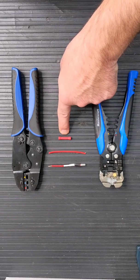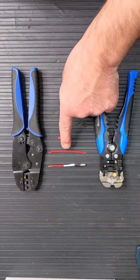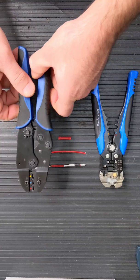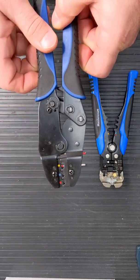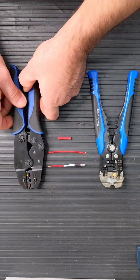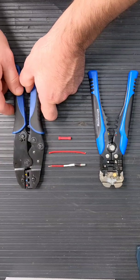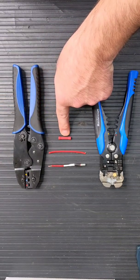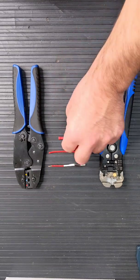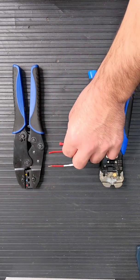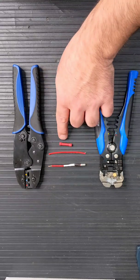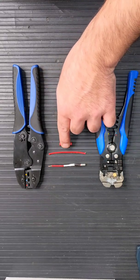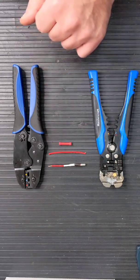You always want to make sure you pick the right connector for the right gauge wire. You can see there's three different colors on your crimper: the red, the blue, and the yellow. That's for the different gauges of connectors. You always want to make sure that you're using the right gauge connector for the right gauge wire.